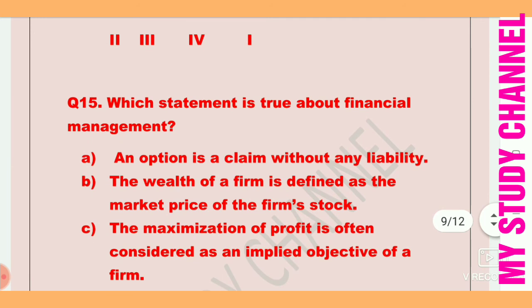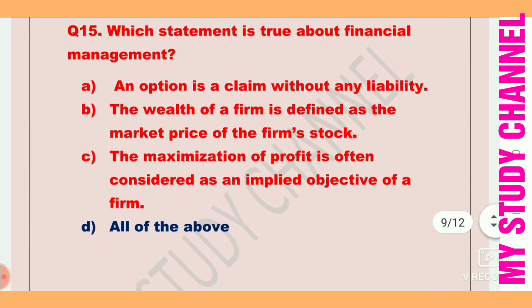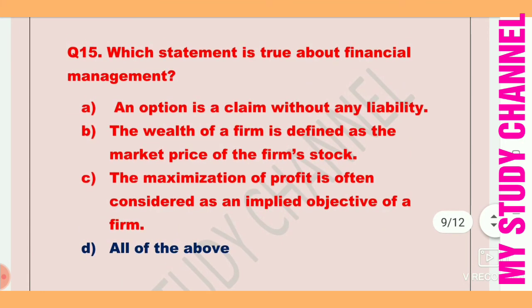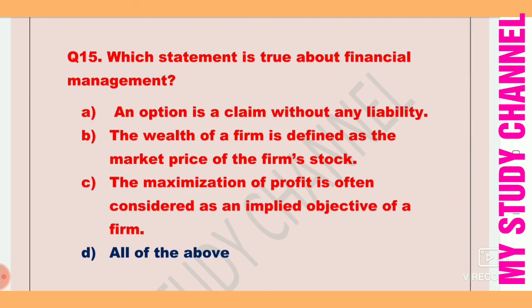Next question: Which statement is true about financial management? Option A is an option is a claim without any liability. Option B is the wealth of a firm is defined as the market price of the firm's stock. Option C is the maximization of profit is often considered as an implied objective of a firm. Option D is all of the above — which is the right answer.